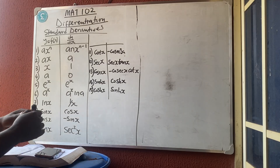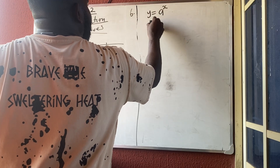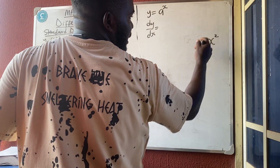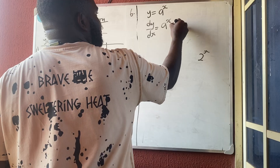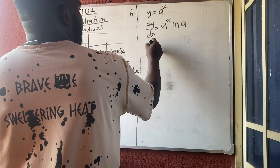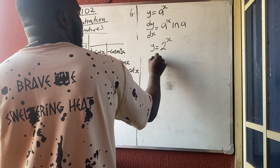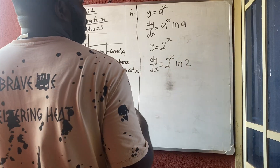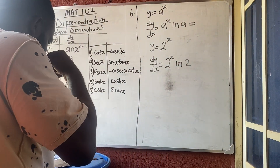Rule 6: if y = a^x — where a constant is raised to the power x — then dy/dx = a^x · ln(a). Initially we had a variable raised to a constant power; now it is reversed. You repeat the term a^x and multiply by ln(a), where ln means log base e.